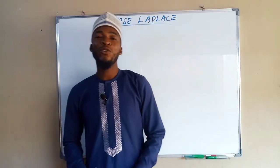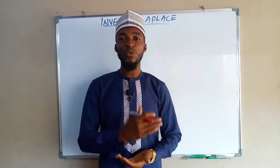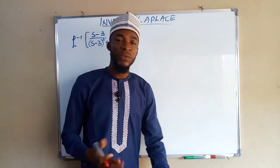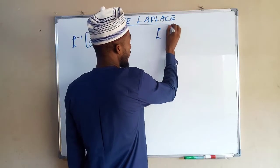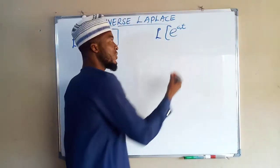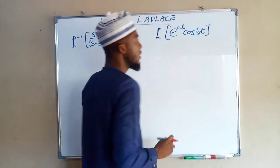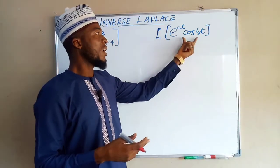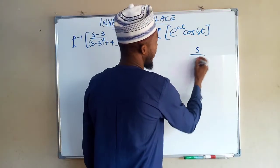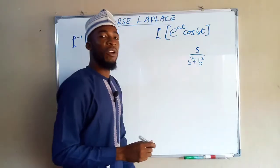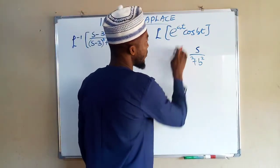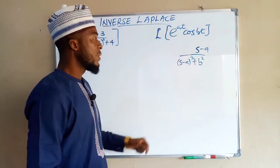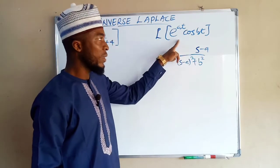Hello, good morning viewers. Let us look at how to find the inverse Laplace of some functions that have to do with the first shift theorem. In our previous lesson, to find the Laplace transform of a real exponent multiplying another function — say cos(bt) — this is the same as finding the Laplace transform of cos(bt), then replacing s with s minus a. The Laplace transform of cos(bt) is s over s² plus b². So taking the inverse Laplace transform brings back the initial function.